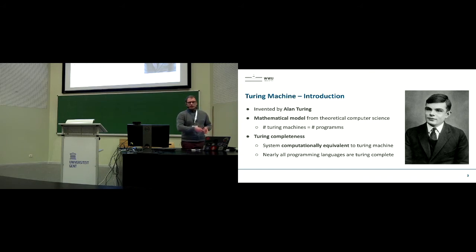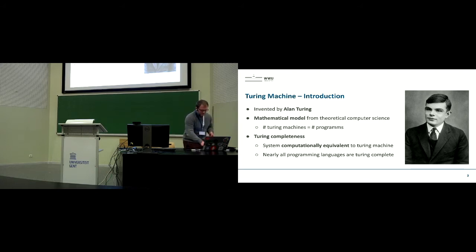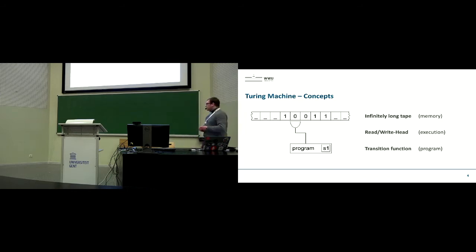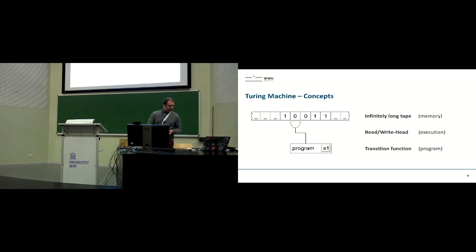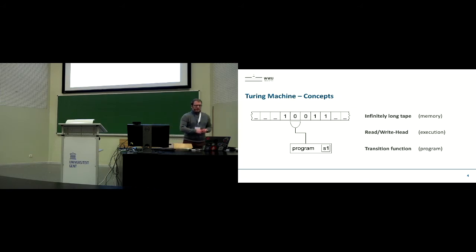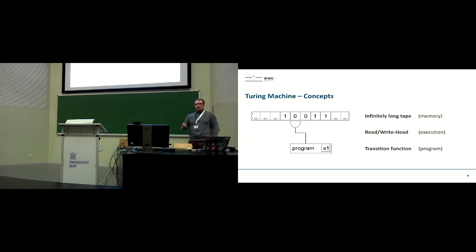What Turing completeness means is that every system that is Turing complete can be used to implement every program that any other Turing complete system can also program. For example, Java and Ruby are both Turing complete, so you can implement the same kind of programs in both languages. In a Turing machine, there are three basic concepts.